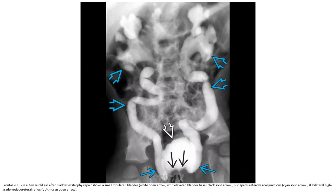The subcutaneous VCUG in a child after bladder exstrophy repair shows a small immobilized bladder with elevated bladder base, J-shaped ureterovesical junction, and bilateral high-grade VUR.